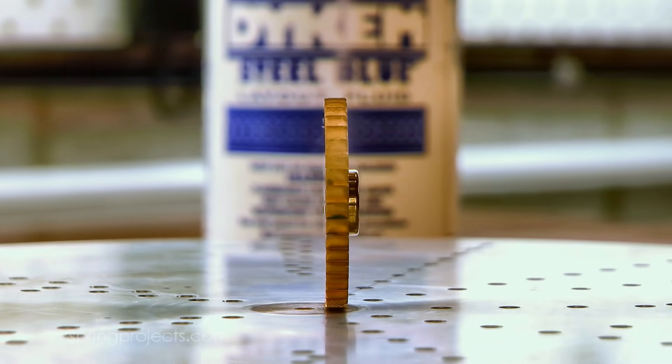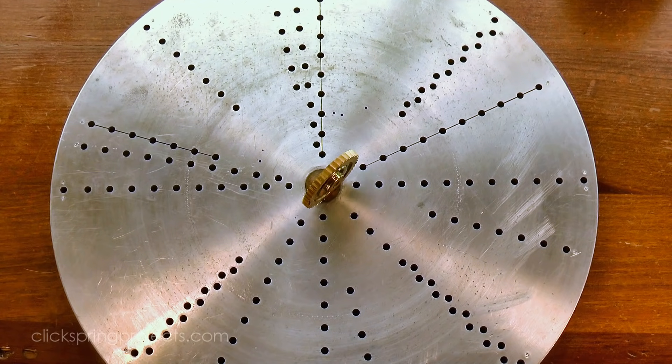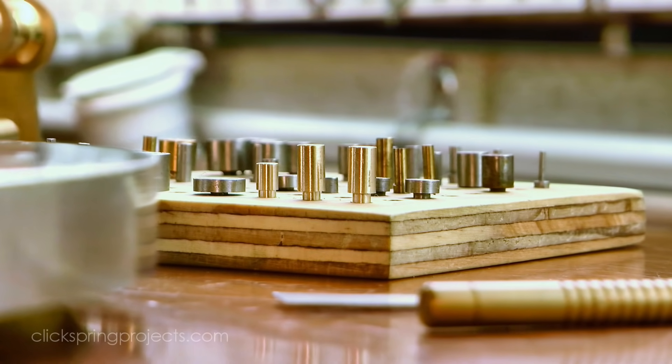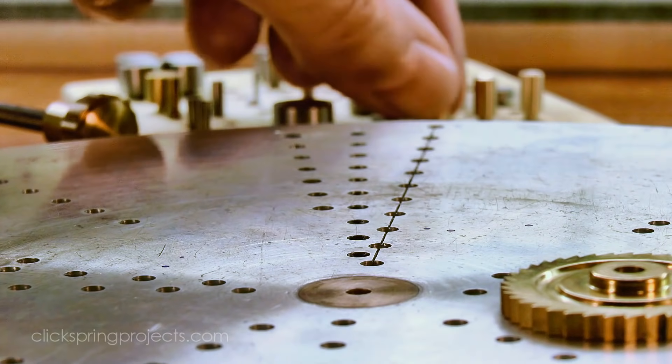The ratchet wheel teeth were cut at the same time as all of the other wheels, and during that process it gets a hole formed in the center. That needs to be modified into a square. I'm using the wheel crossing jig, as well as some of these custom sized pins to mark it out.